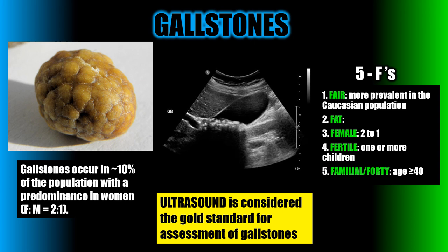A few key features about gallstones: they occur in approximately 10% of the population, with a predominance in women. Ultrasound is considered the gold standard for assessing gallstones. When it comes to who gets gallstones, think of the five F's: fair skin (more prevalent in the Caucasian population), fat or overweight, female, fertile, and familial history or over the age of 40.